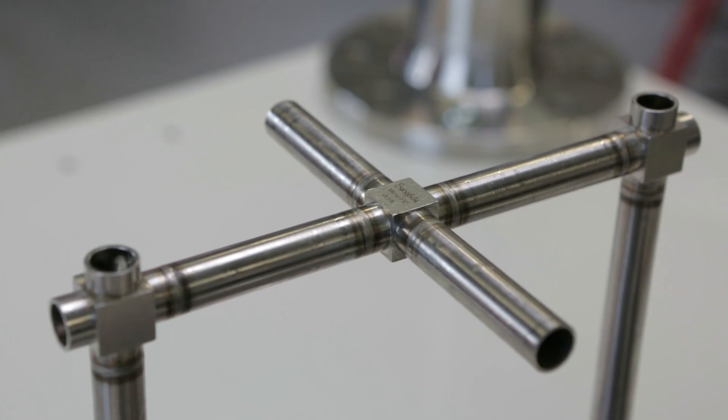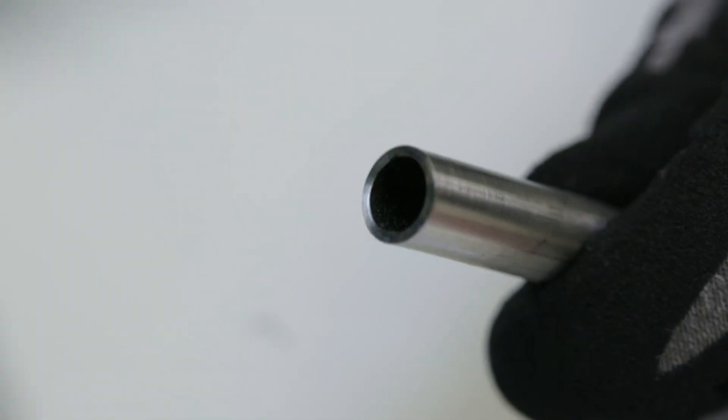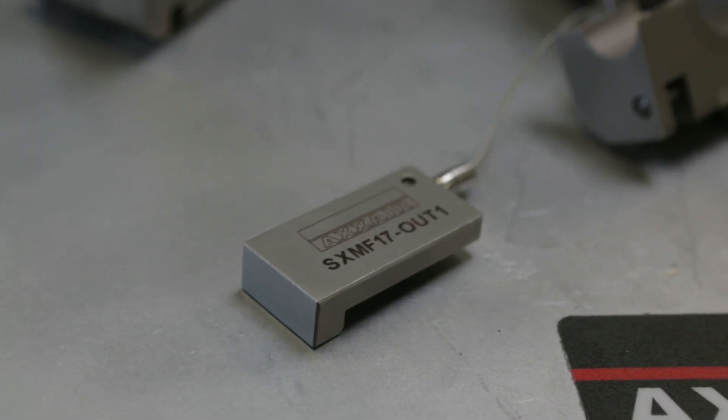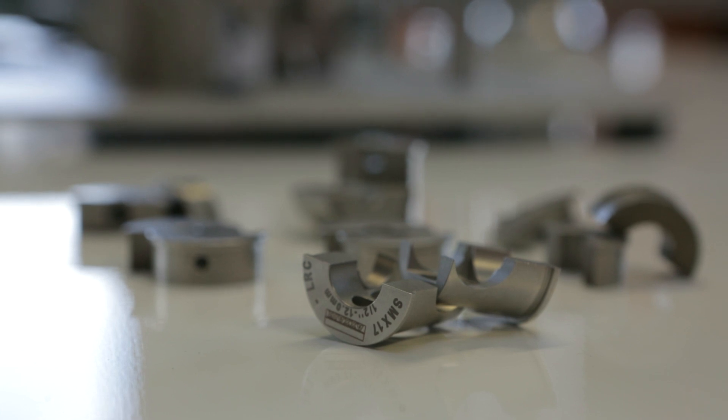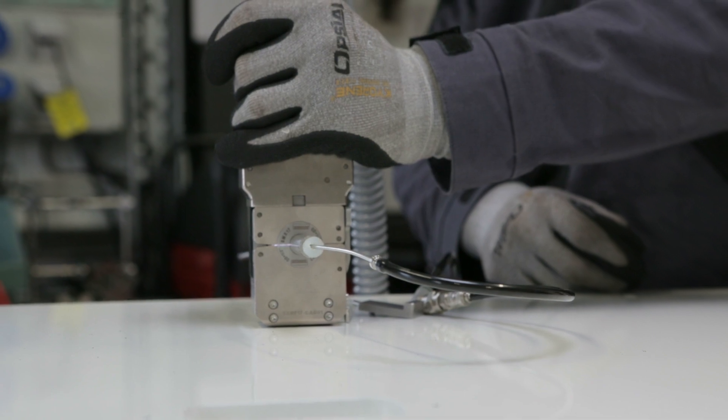With this head, it is possible to weld tubes with diameters from 3 to 17.2 mm, or respectively from 1⅛ to ⅝ of an inch. As a closed head with optimal gas protection, it allows welding without tacking or centering, and is compatible with all micro fittings on the market.